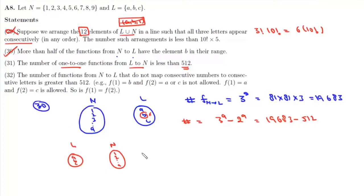Now total number of 1-1 functions will be given by 9P3 which is 9 × 8 × 7. The value is 504 which is less than 512. That means the statement 31 is also correct.